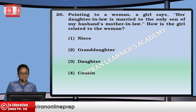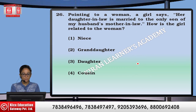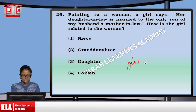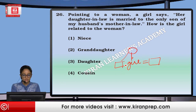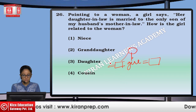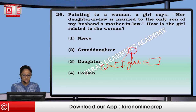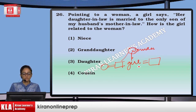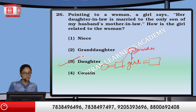Next: pointing to a woman, a girl says her daughter-in-law is married to the only son of my husband's mother-in-law. Girl's husband's mother-in-law means girl's mother. Only son means girl's brother. Her daughter-in-law is married to this person, so she is the daughter-in-law of this person — that means this is the woman. How is the woman related to the girl? The girl will be the daughter of the woman. That means option number three.